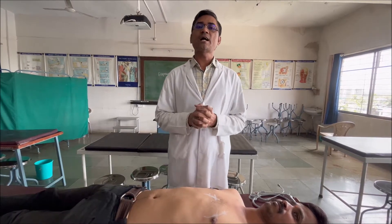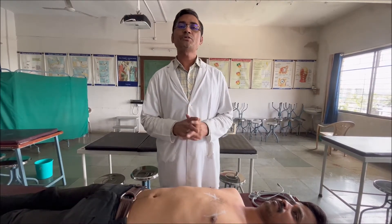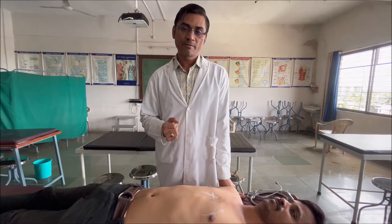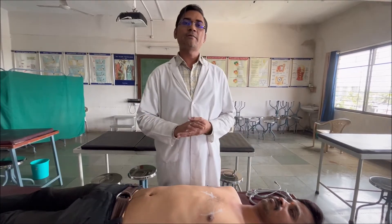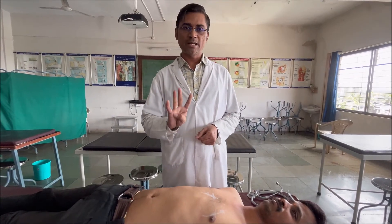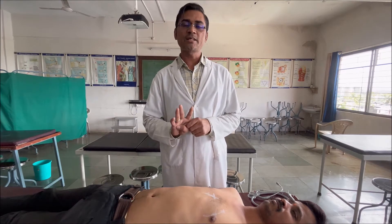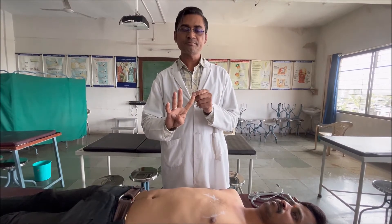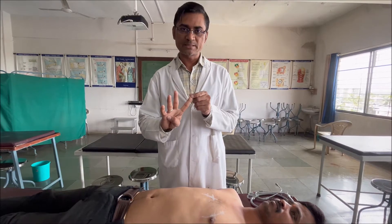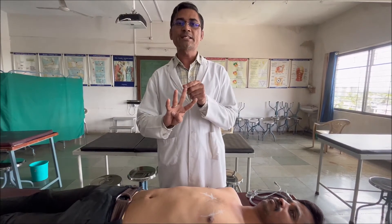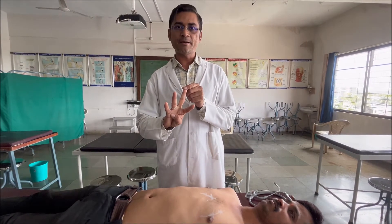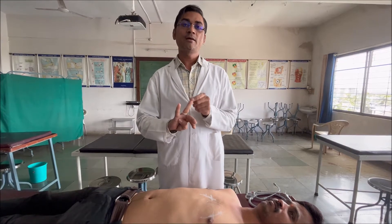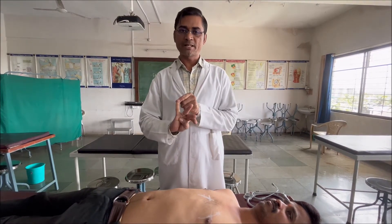Before discussing the heart sounds, we should know in which area we are going to auscultate for various heart sounds. The areas are divided mainly into four areas of auscultation. The first area is the mitral area, which coincides with the apex beat. The second area is the tricuspid area. The third area is the aortic area, and the fourth area is the pulmonary area.